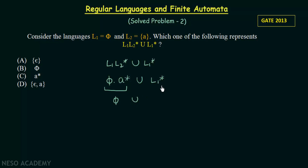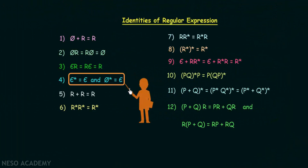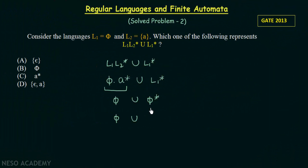Now we have Phi union L1 star. L1 is Phi, so we need Phi star. From the identities of regular expressions, Phi star is equal to Epsilon. So we replace Phi star with Epsilon, giving us Phi union Epsilon.